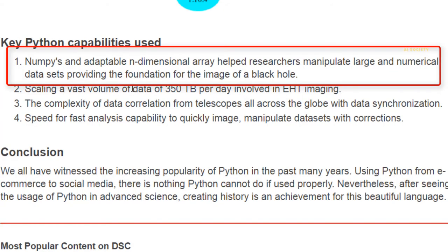What were the key Python capabilities used to capture the first image of a black hole? Number one: NumPy's adaptable n-dimensional arrays helped researchers manipulate large numerical datasets, providing the foundation for imaging the black hole. NumPy arrays are really effective at handling large-dimensional data, and since NumPy is built on C, its processing is extremely fast.